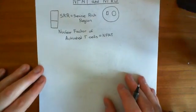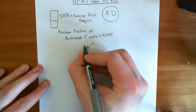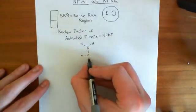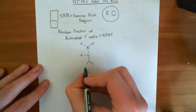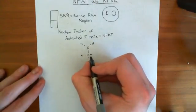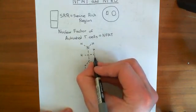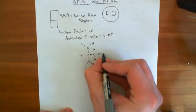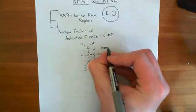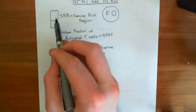Let's draw out the structure of the amino acid serine. Here's the amino group of our amino acid, here's the alpha carbon with a hydrogen off it, and here's the carboxyl group coming off the alpha carbon. Off this alpha carbon, you also have the R group. In serine, what you have is a methylene group with a hydroxyl group coming off that. So in this serine-rich region, you have lots of these serine residues making up your protein.